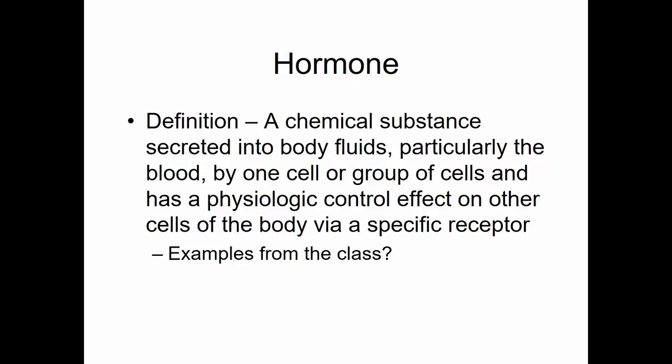So we start out - what in the world is a hormone? A hormone is a chemical substance secreted into body fluids, particularly the blood, by one cell or group of cells, and has a physiologic control effect on other cells of the body via a specific receptor. The key here is it's a chemical substance, it's carried in body fluids, and it has to do its job through a receptor.